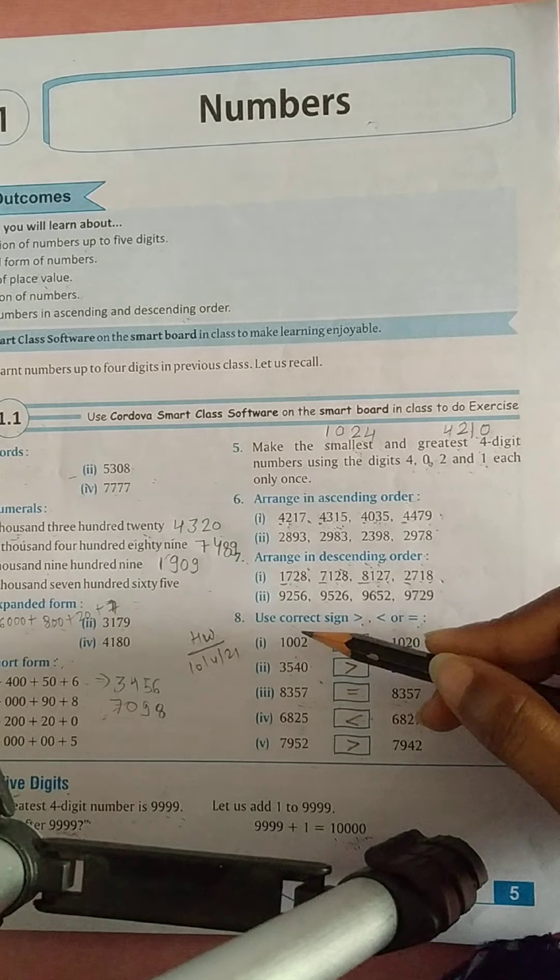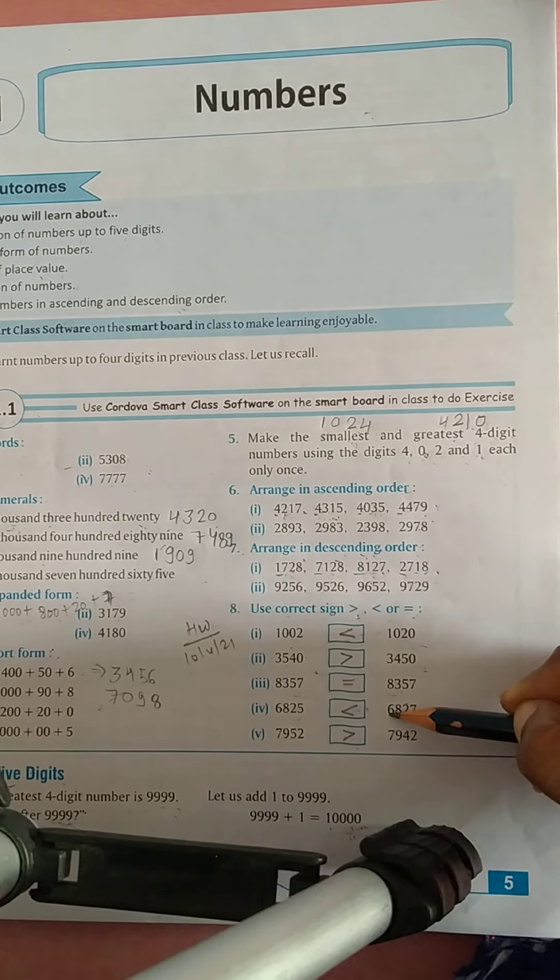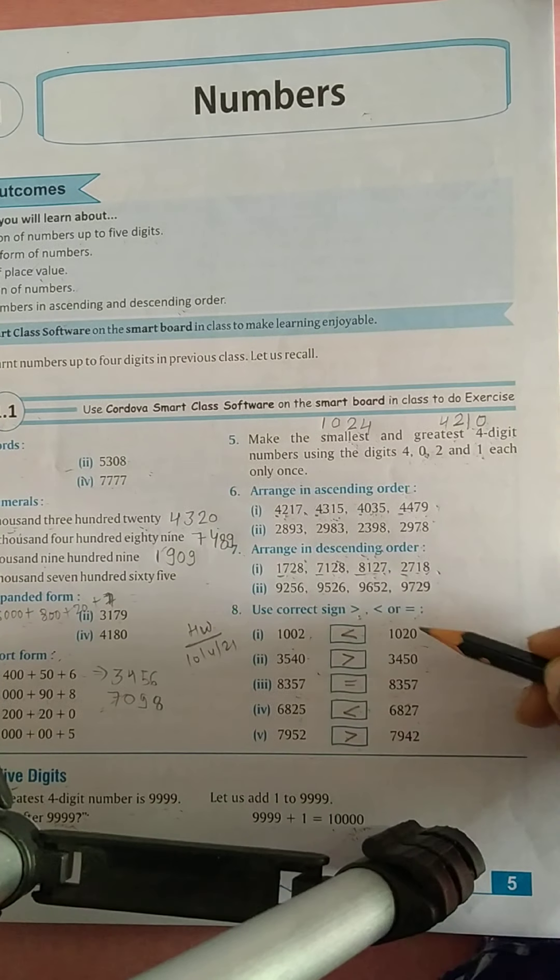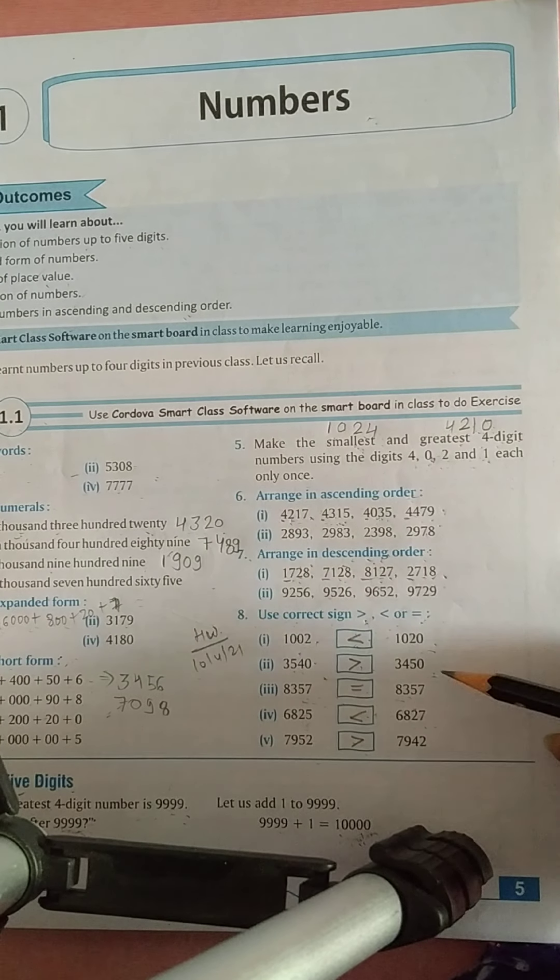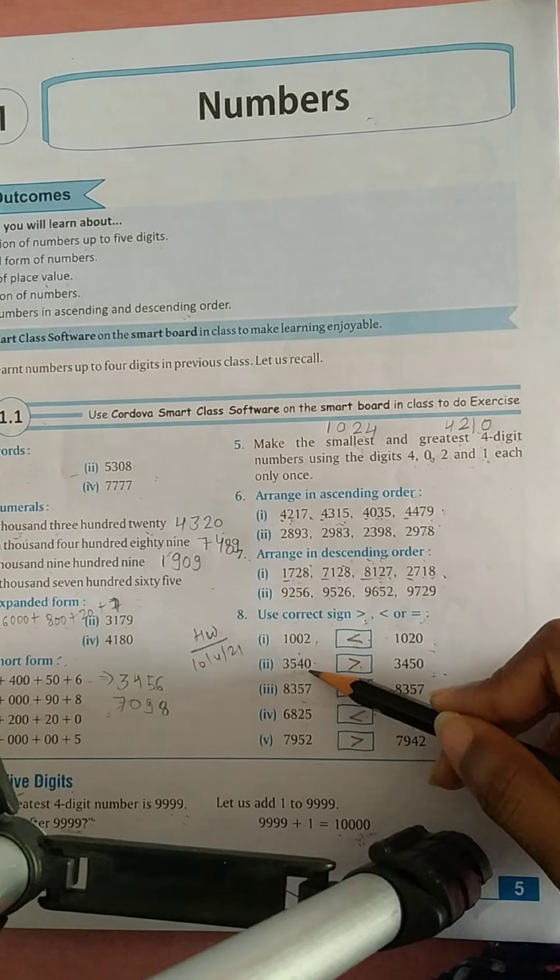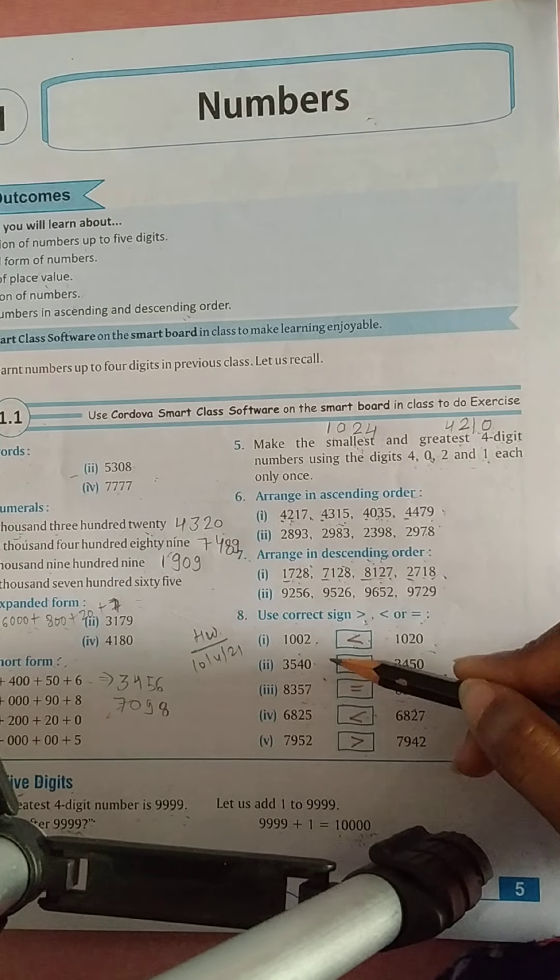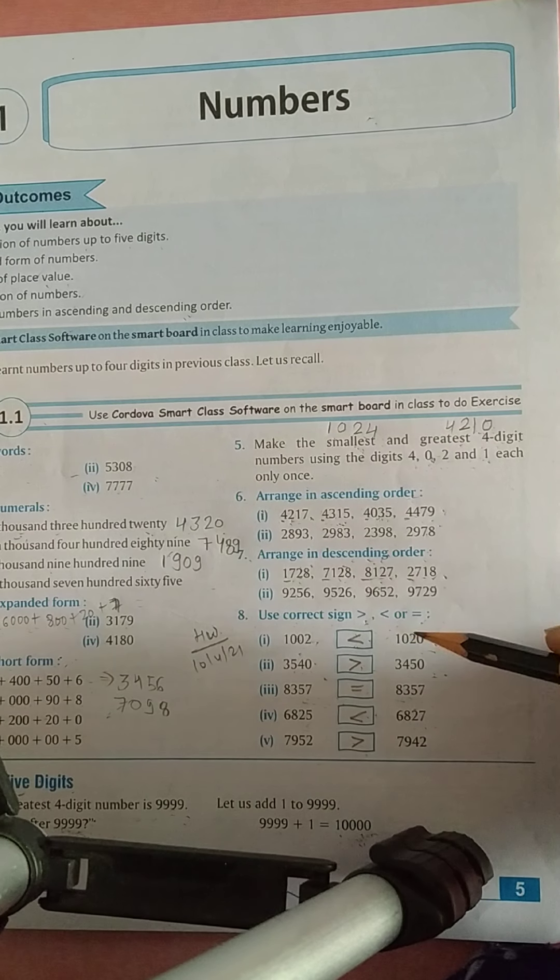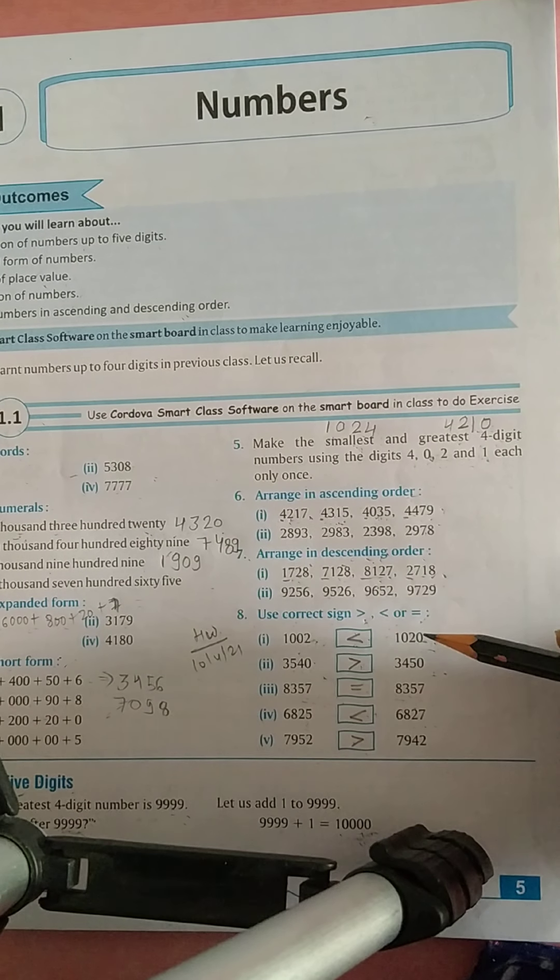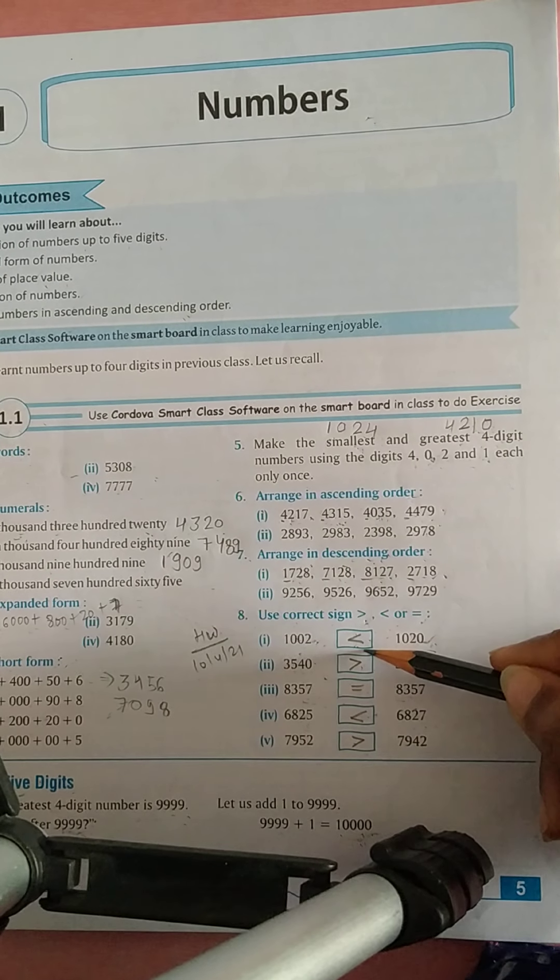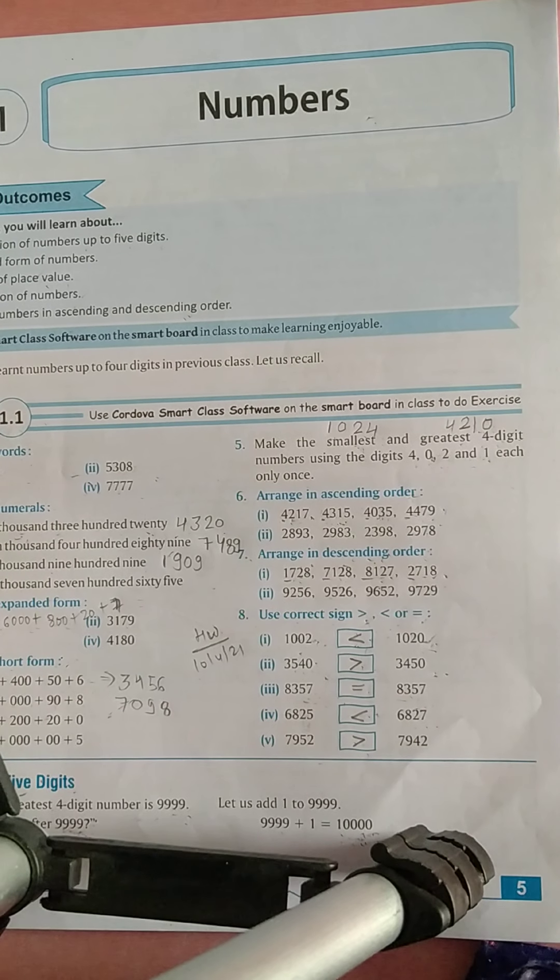Now question number 8 is use correct sign, greater than, less than or equal to. Numbers को compare करना है. So if the number on the left side is bigger than the right side, then we will put greater than sign here. Like 3,540 and 3,450. So left side number is bigger, so greater than sign. And if the number on the right side is bigger than the left side, like 1,002 and 1,020. So right hand side number is bigger, that's why less than sign. And if both the numbers are equal, then we will put equal to sign there.